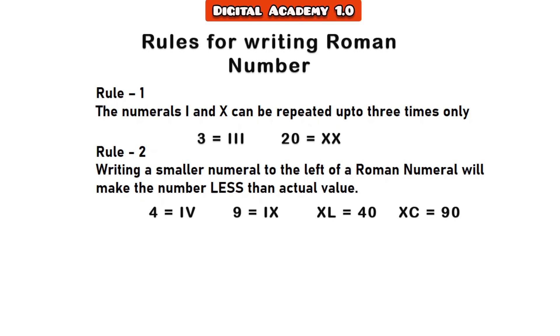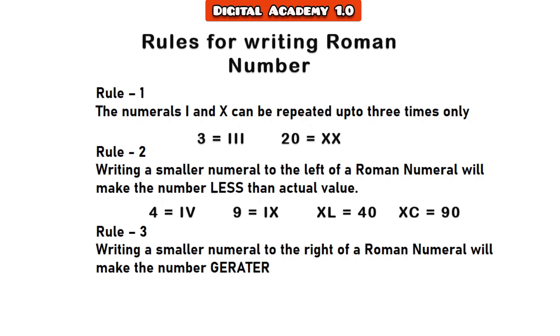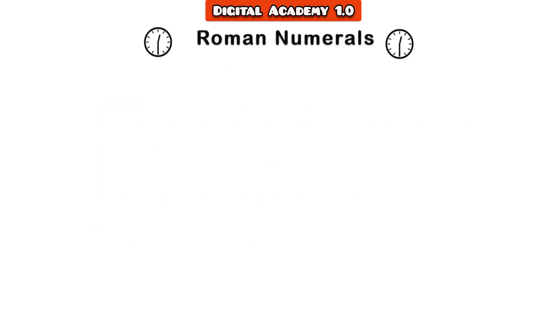Rule three: writing smaller numerals to the right of a Roman numeral will make the number greater than actual value. For example, VII for 7, XI for 11, VIII for 8, XV for 15.